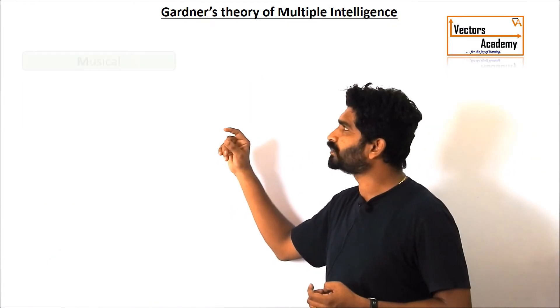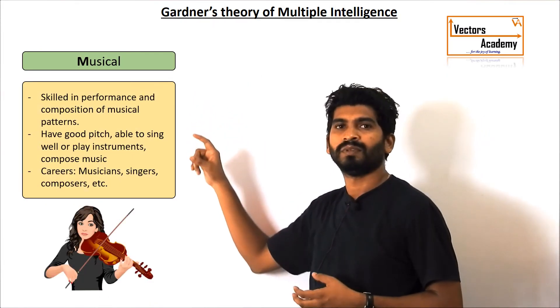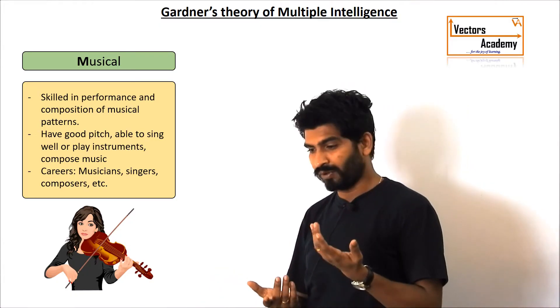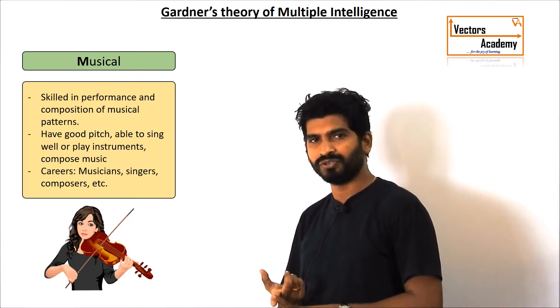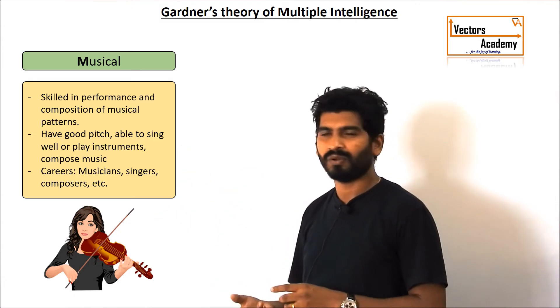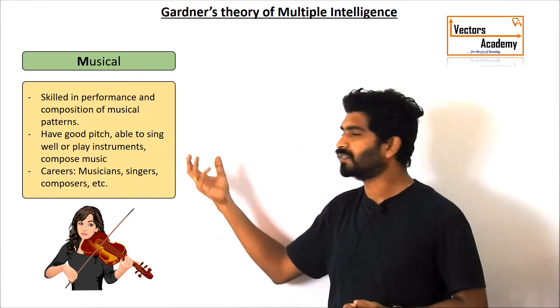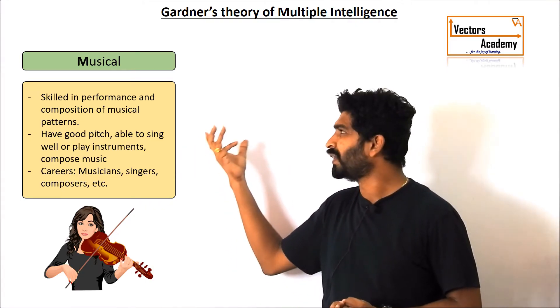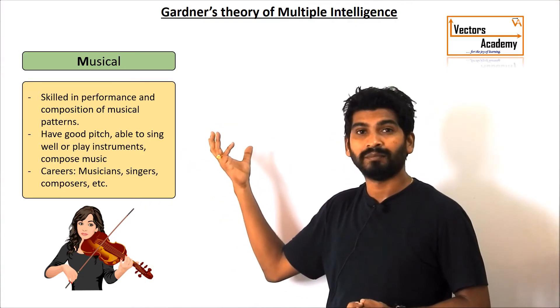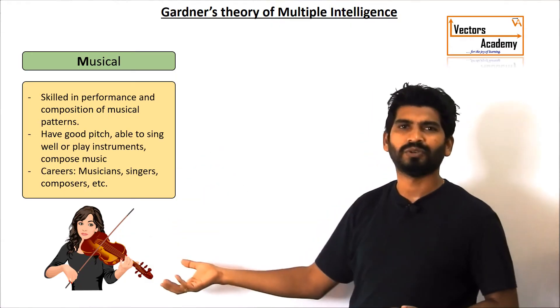The next comes musical intelligence. Musical intelligence can be of operating different type of instruments or can be singing or can be any other thing related to songs. So such type of persons can become singers, can become musicians and so on.